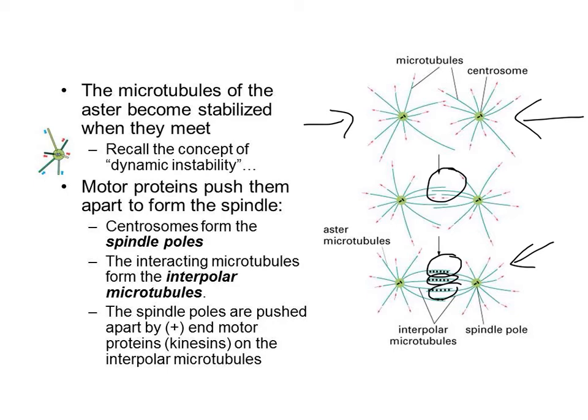The interpolar motors, when they bind to interpolar microtubules, can actually motor towards the plus-ends — which are sticking out in this orientation — and when they do so, it actually helps to push the poles apart so that the spindle can expand, which is needed for mitosis to occur properly.